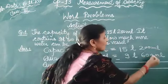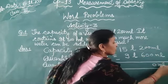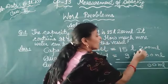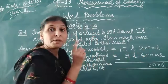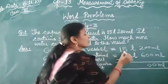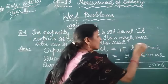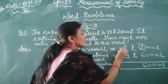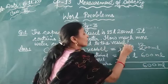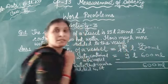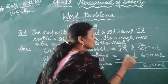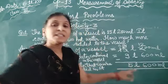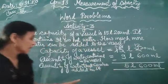0 minus 0 is 0. Then 0 minus 0 is 0. Now 2 is the smaller number and 6 is the bigger number, so we borrow from here. That is 12. And 1 minus, so 12 minus 6 is 6. Again we borrow from here — that is 4, making it 14. 14 minus 9 is 5. Our answer comes: 5 litre 600 millilitre.